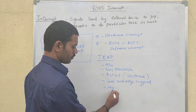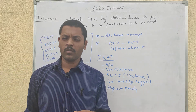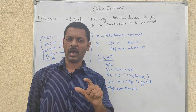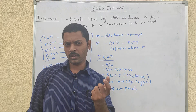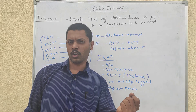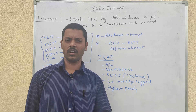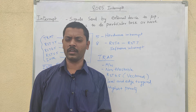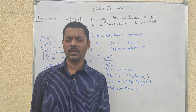The highest priority interrupt is Trap. Suppose the microprocessor is running a program and one instruction is executing — the interrupt request is checked after each instruction. If there are different simultaneous interrupts such as Trap, RST5.5, and RST7, Trap has the highest priority and INTR has the lowest priority.